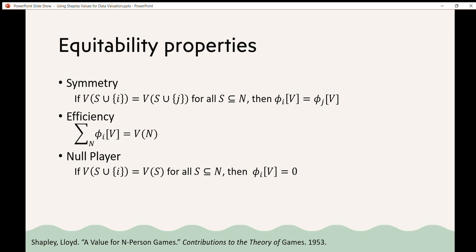Similar to efficiency is the null player, so that if the value of s union i is equal to the value of s for all subsets s in n, then the Shapley value of i of the game v should equal zero. So this says that if a player never contributes to any subsets, then its Shapley value should be zero.